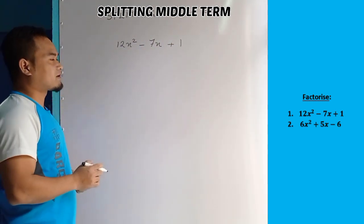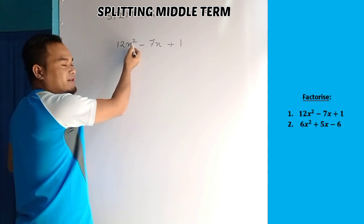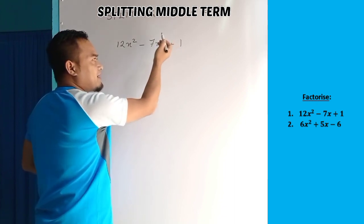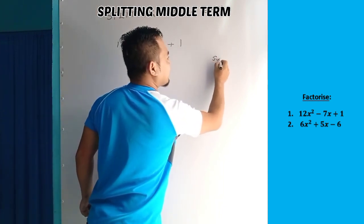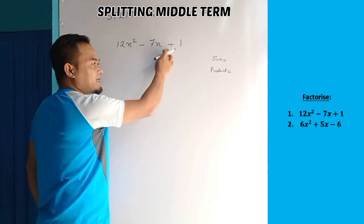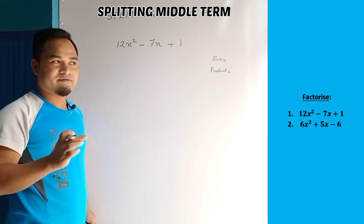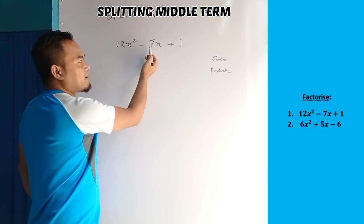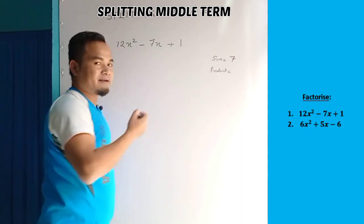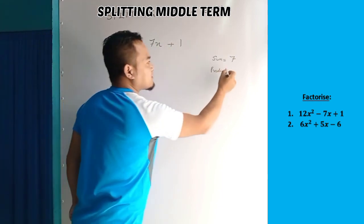We need to know about the constant term and the coefficient. The coefficient of x is 7. For the product, we take the coefficient of x squared and multiply it by the constant term. So 12 into 1 is 12. We need two numbers whose product is 12 and whose sum is 7.